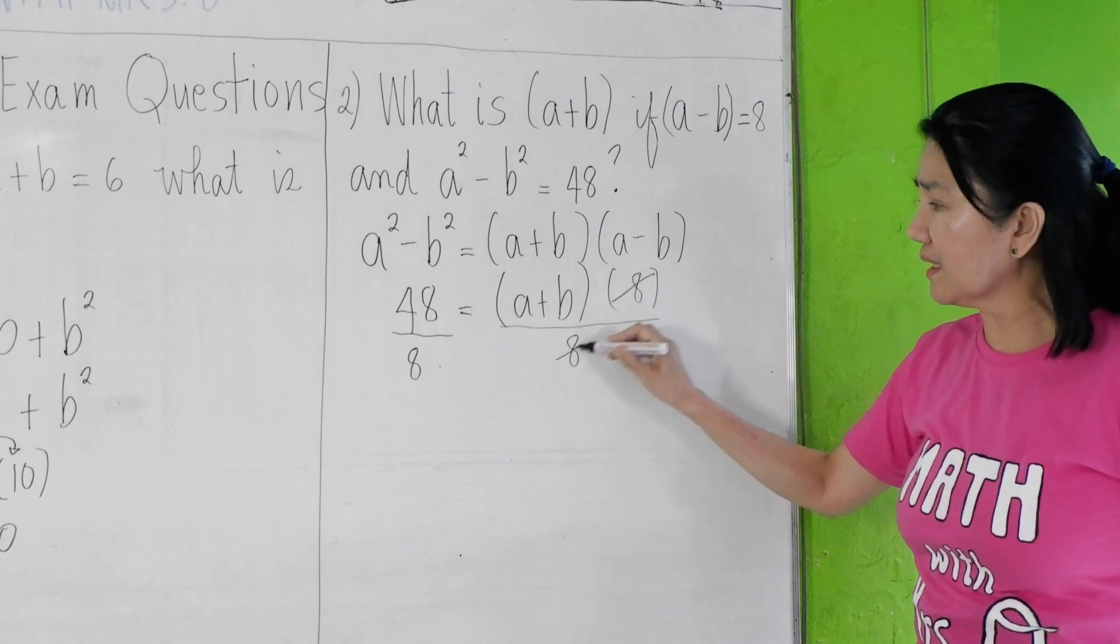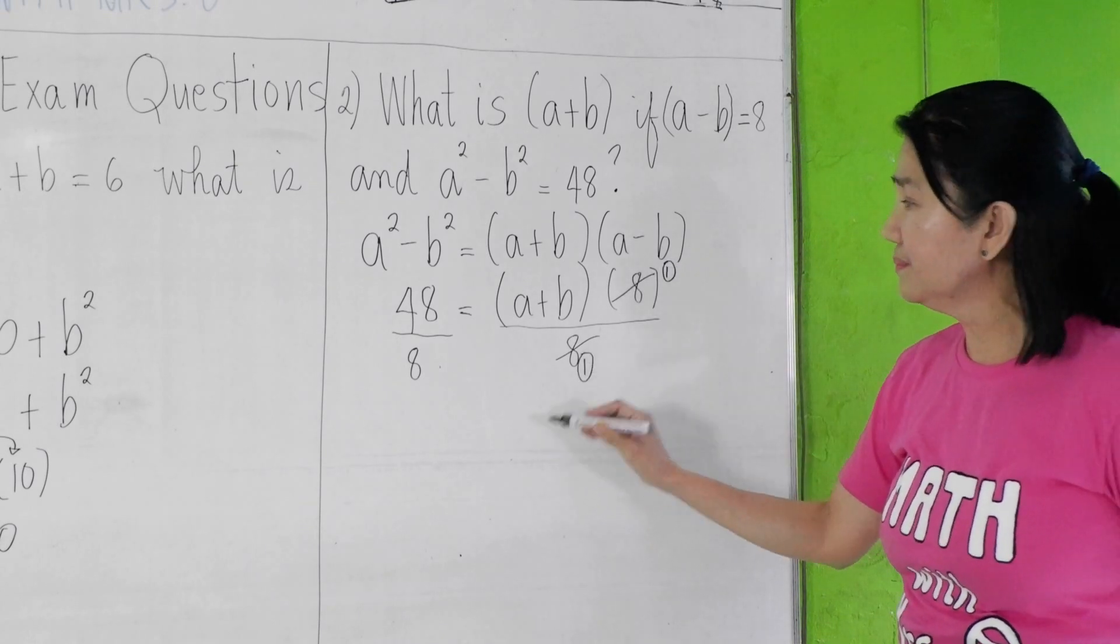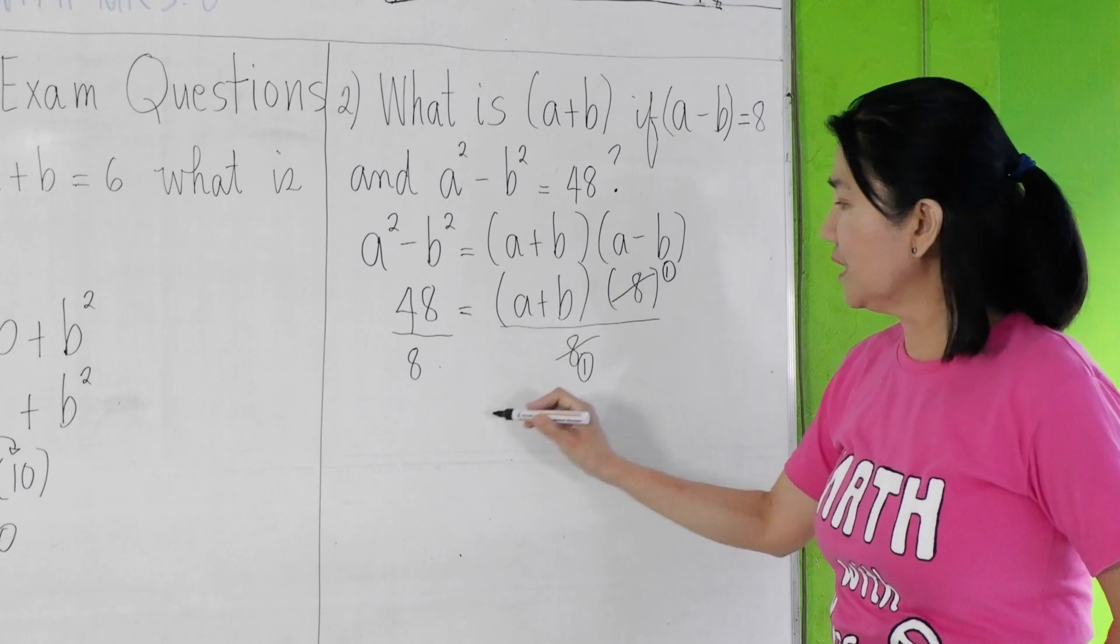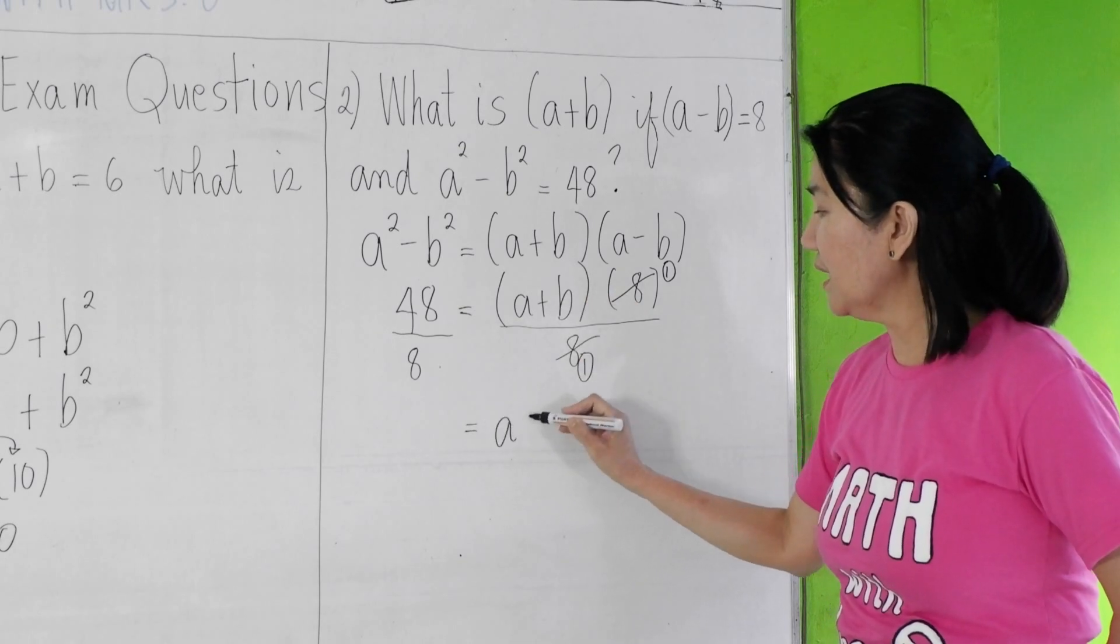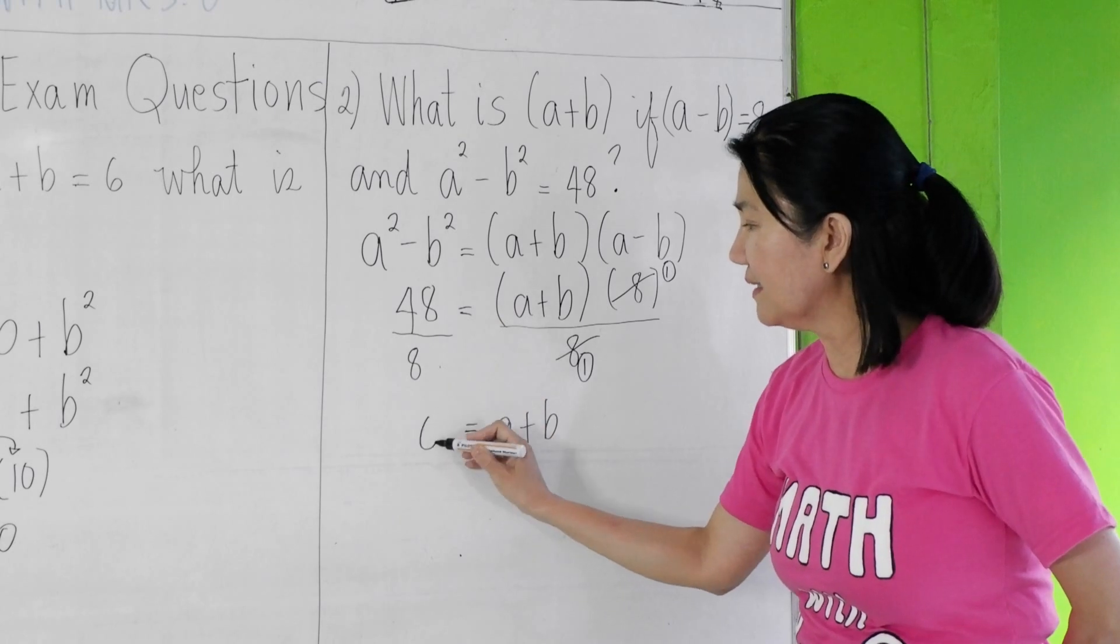Then observe that we can cancel 8 and 8 here. That will give you a 1 and a 1. So 1/1 times a+b is a+b equals 48 divided by 8 is 6.